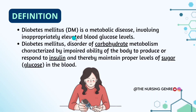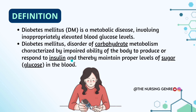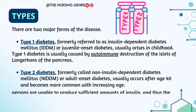Definition: Diabetes mellitus is a metabolic disease involving inappropriately elevated blood glucose levels. It is a disorder of carbohydrate metabolism characterized by impaired ability of the body to produce or respond to insulin, and thereby maintain proper levels of sugar in the blood — resulting in increased blood glucose levels.